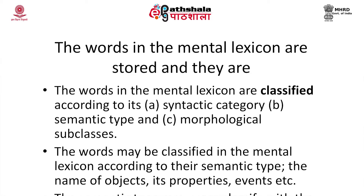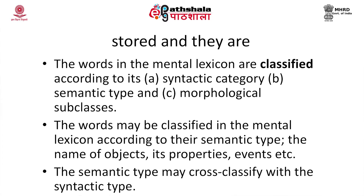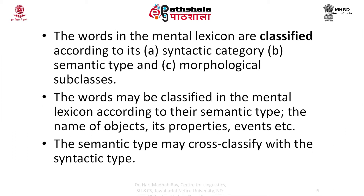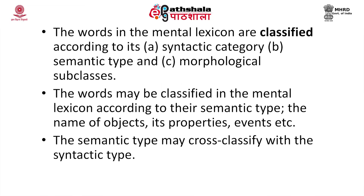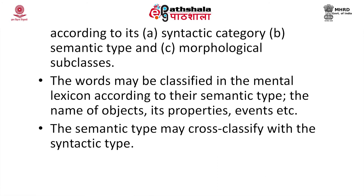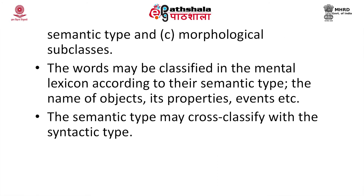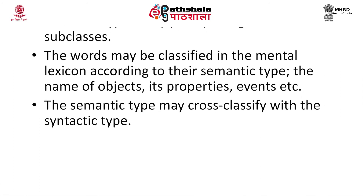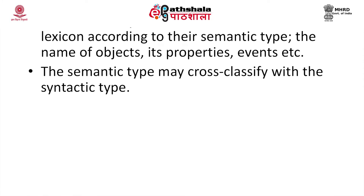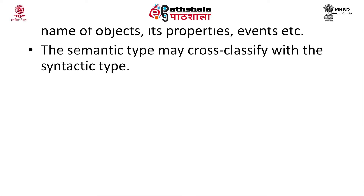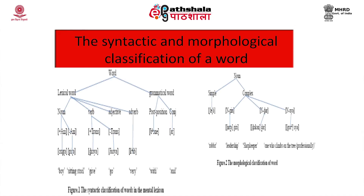In our mental lexicon, the words are stored and classified according to their syntactic category, morphological subclasses, and semantic type. Words may be classified in the mental lexicon according to semantic type — for example, the name of objects, properties, events, etc. The semantic type may cross-classify with the syntactic type as well.